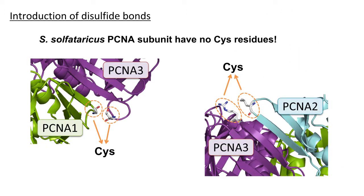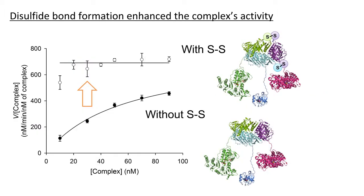In this study, we tried to stabilize the complex by introducing disulfide bonds. Interestingly, the three PCNA subunits have no cysteine residues, so we introduced cysteine residues at sites neighboring the interface for heterotrimer formation. The introduced cysteine residues successfully formed disulfide bonds after incubation with an oxidizing agent. As a result, the intersubunit disulfide bonds stabilize the complex and enhance the apparent specific activity.